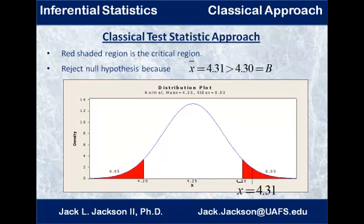What does this mean? It means that it's so unlikely — with such a small probability — that x-bar would land in the red region. The probability of x-bar landing in the red is alpha, which is 0.1. Since we got something further out there in that red region, the probability of a type I error is small, smaller than alpha, and so we reject the null hypothesis in favor of the alternative hypothesis.